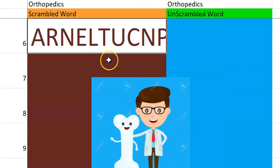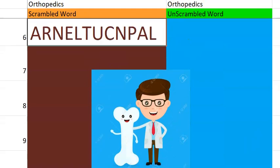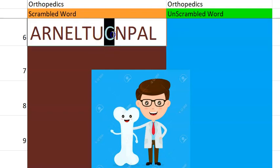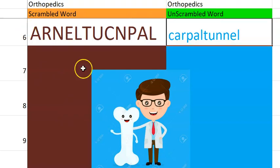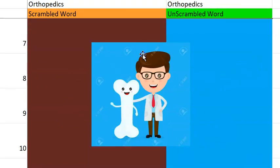Let's go to the sixth one. What do you think this one is? Think orthopedics and think about your hand. It's two words starting with C and the other word starting with T. When the median nerve is compressed, what do you say? Carpal tunnel syndrome in your hand. Very good.